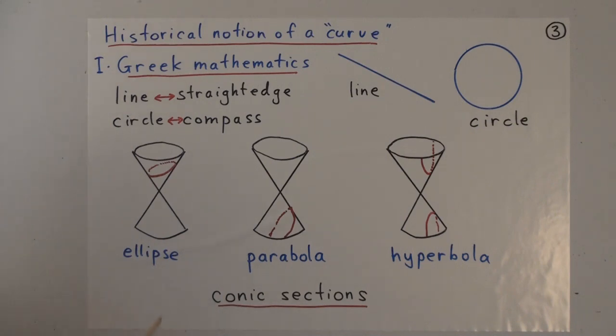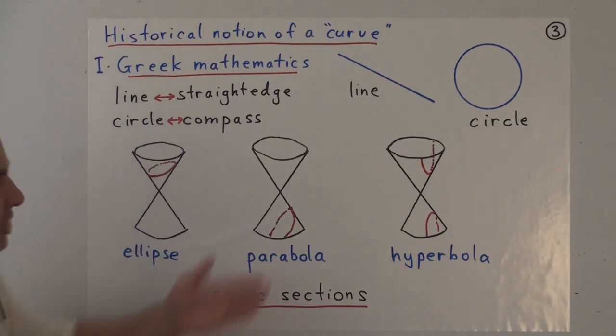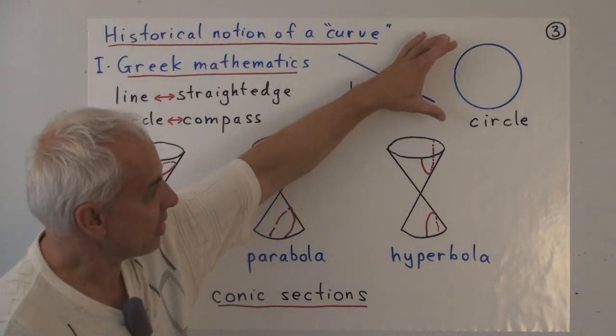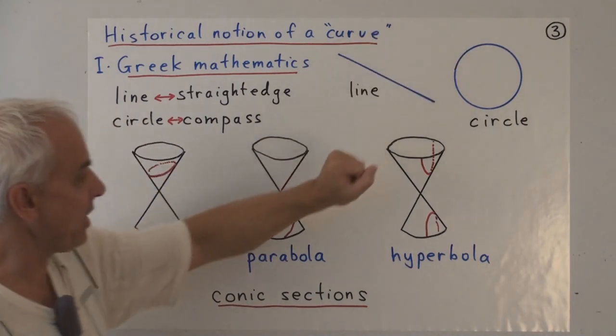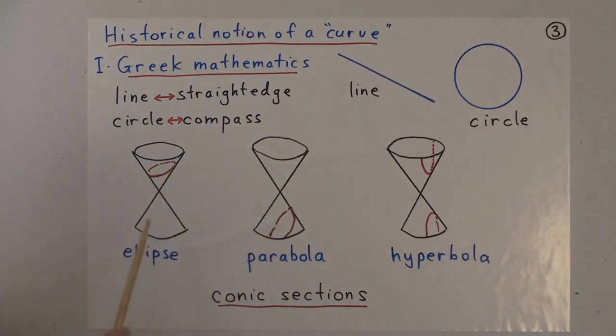Then sort of one level up, they discovered the conic sections. The conic sections are obtained by first of all combining the circle and the line to get a cone. So the cone is what you get when you take a circle and then a point not in the plane of that circle, and drawing all the lines from that point to all the various points on the circle. Then the conic sections are obtained by slicing that cone with a plane.